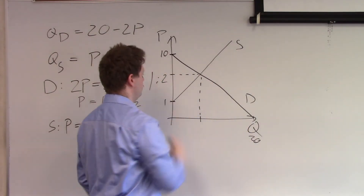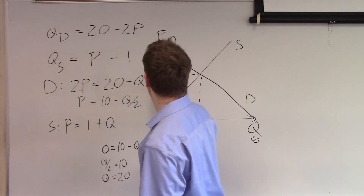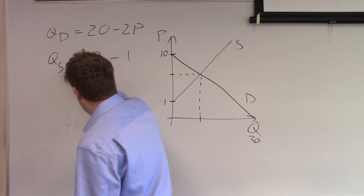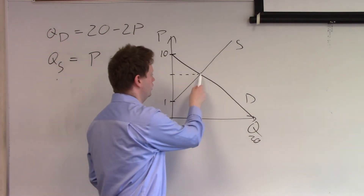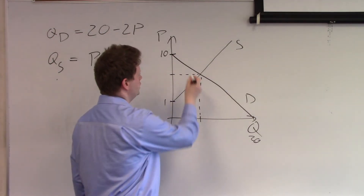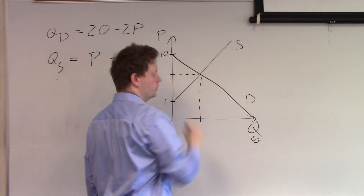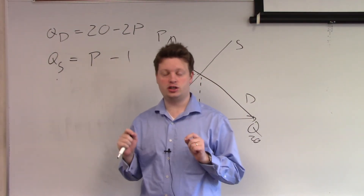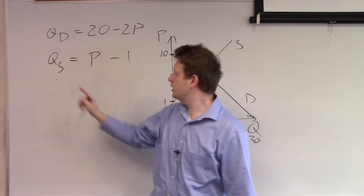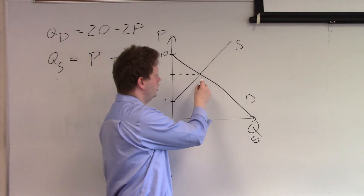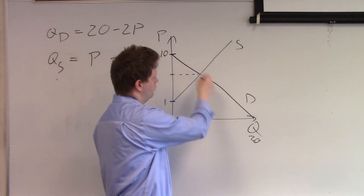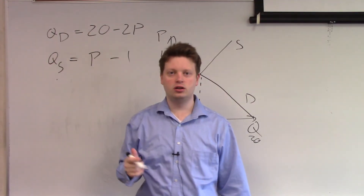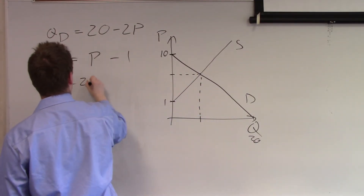All that's left is finding the equilibrium point where the two curves intersect — the equilibrium quantity and price. Going back to the original equations, QD equals 20 minus 2P and QS equals P minus 1. At equilibrium, QD equals QS, so we set the two equations equal and get 20 minus 2P equals P minus 1.